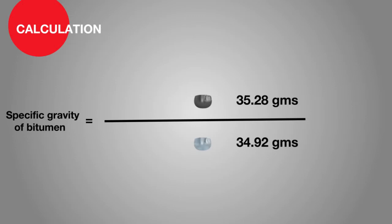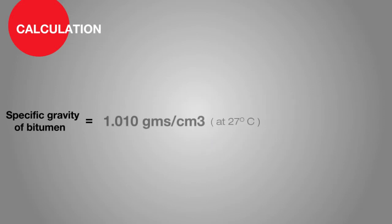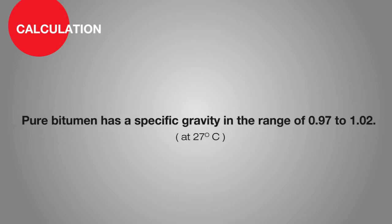Weight of bituminous material is equal to 35.28 grams. Weight of equal volume of water is equal to 34.92 grams. So specific gravity of bitumen is equal to 1.010 gram per centimeter cube. Pure bitumen has a specific gravity in the range of 0.97 to 1.02.